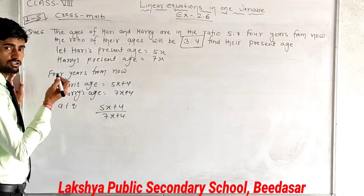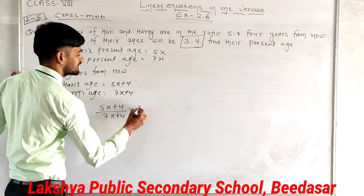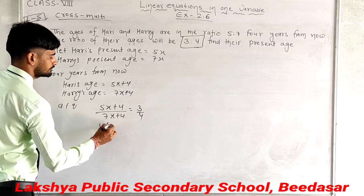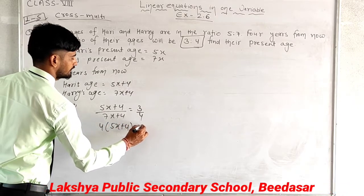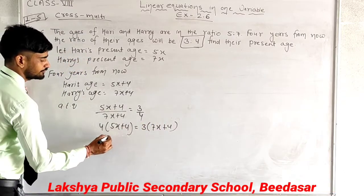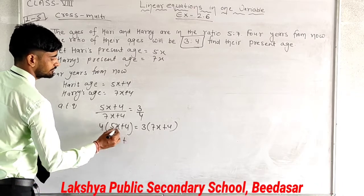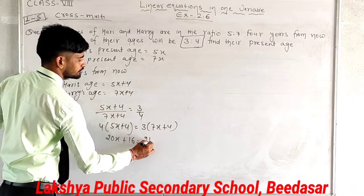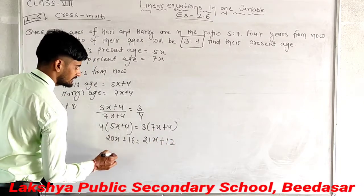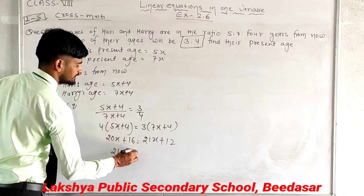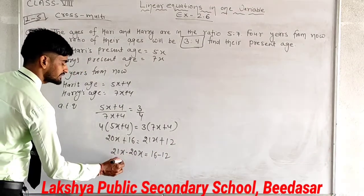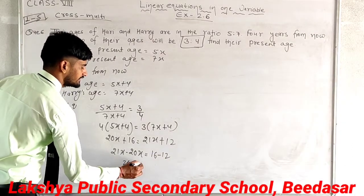Since both statements are true, we set our ratio equal to the given ratio. Cross multiply: 4 times (5x plus 4) and 3 times (7x plus 4). This gives 20x plus 16 equals 21x plus 12. Separating variables: 21x minus 20x equals 16 minus 12, so x equals 4.